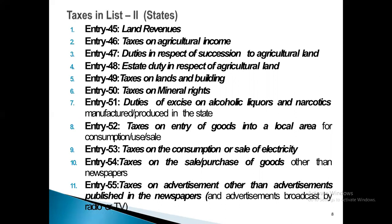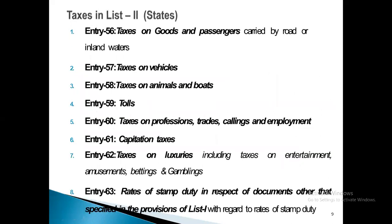Entry 52: taxes on entry of goods into a local area for consumption, use, and sale. Entry 53: taxes on consumption or sale of electricity — the rate of tax applies according to entry 53. Entry 54: taxes on sale and purchase of goods other than newspapers. Entry 55: taxes on advertisements other than those published in newspapers and broadcast by radio and TV. Entry 56: taxes on goods and passengers carried by road and inland waterways. Entry 57: taxes on vehicles. Entry 58: taxes on animals and boats.